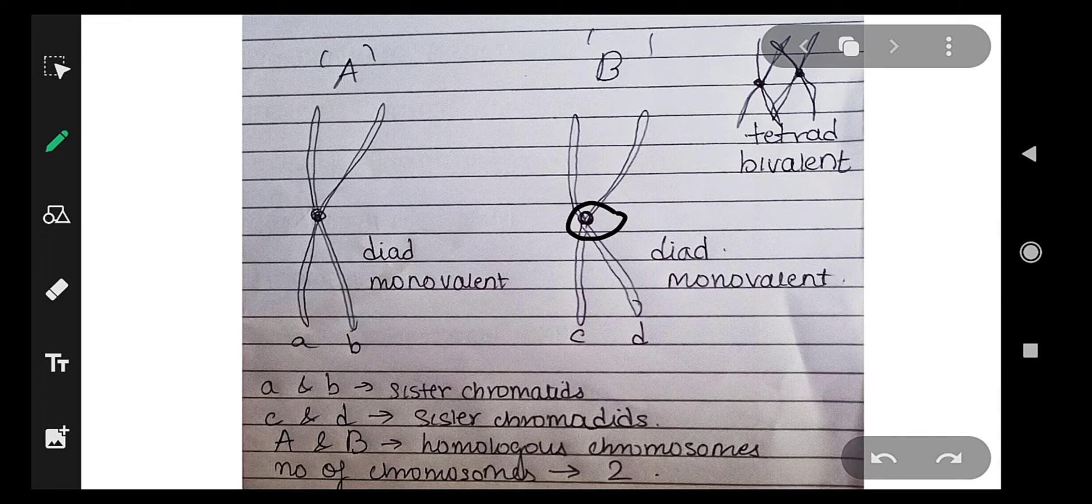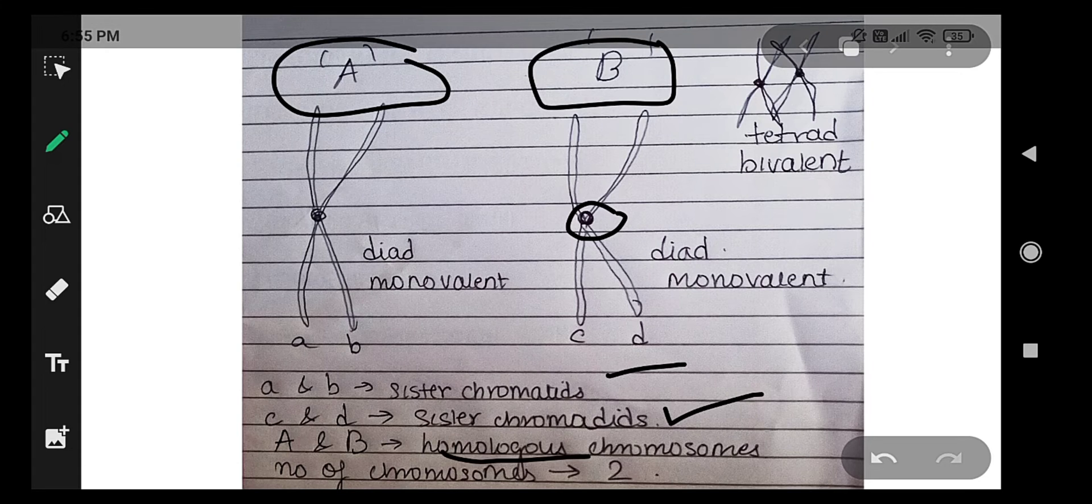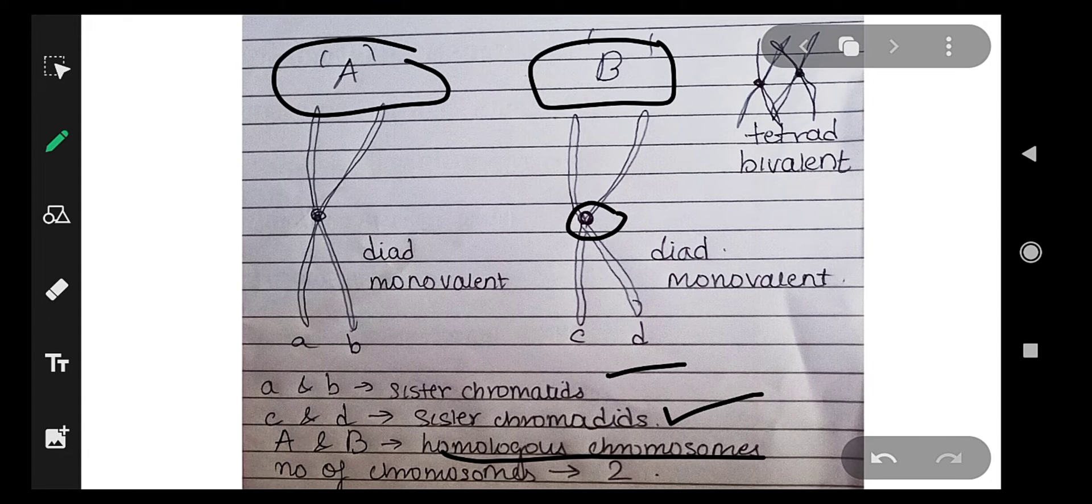To revise: we can say that small a and small b are sister chromatids. Small c and small d are also sister chromatids. But we can say that capital A and capital B are homologous chromosomes.